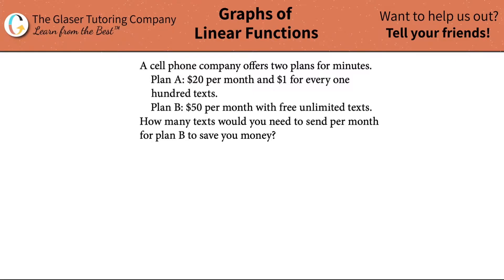A cell phone company offers two plans for minutes. Plan A: twenty dollars per month and one dollar for every 100 texts. Plan B: fifty dollars per month with free unlimited texts. The question is: how many texts would you need to send per month for Plan B to save you money? If you're going to send one text, Plan A is the way to go. If you're going to send a million texts, Plan B is the way to go. But what is the number of texts at which you would be indifferent between the two plans?